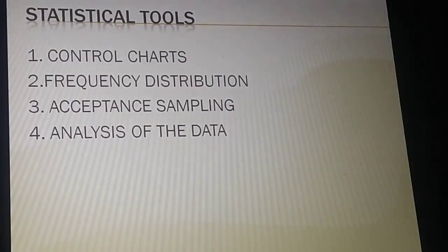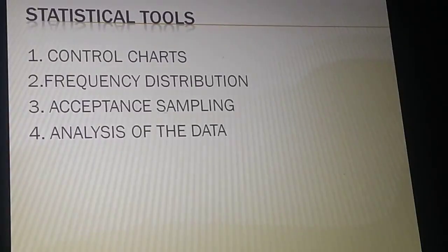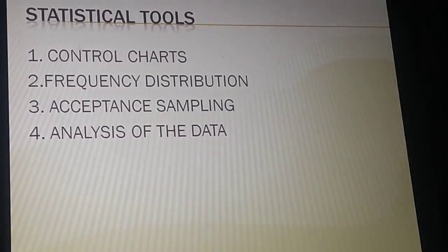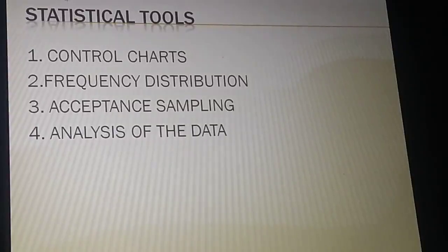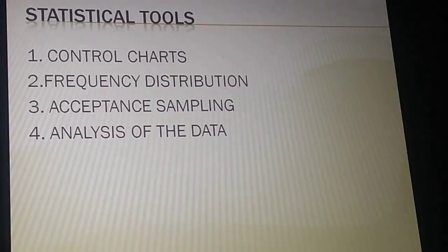The tools used in maintaining quality control are control charts, frequency distribution, acceptance sampling, and analysis of data. We have already covered acceptance sampling and will study control charts in detail in the next lecture. If you have missed any previous lectures, you can find links in the description. That's all for today — thank you.